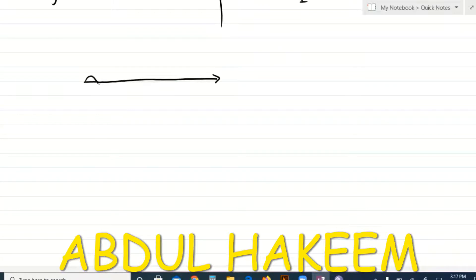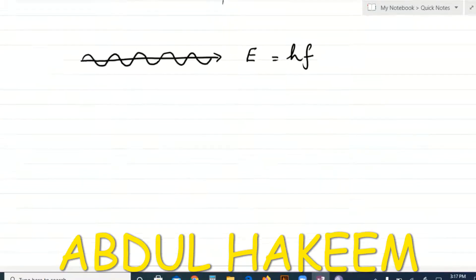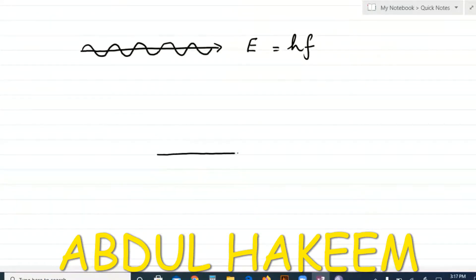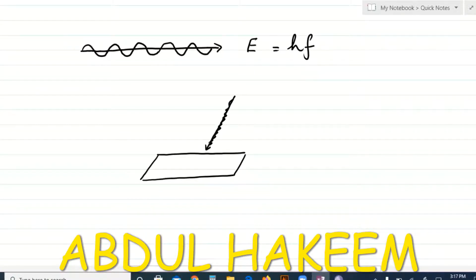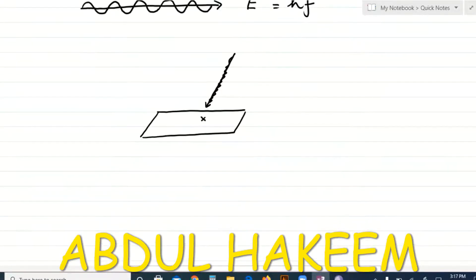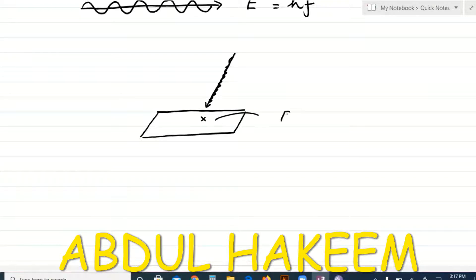Since the photon carries energy and is electromagnetic in nature, we draw it like an electromagnetic wave. This symbol represents a single photon carrying energy E = hf. When this photon is incident on the surface of a metal and hits the surface, its energy E = hf is absorbed by the surface electron.